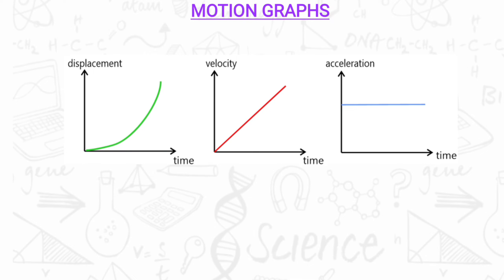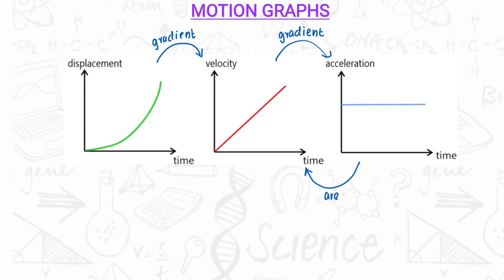Here we have three graphs: a displacement-time, a velocity-time, and an acceleration-time. The gradient of the displacement-time graph gives us the velocity, the gradient of the velocity-time graph gives us the acceleration, and the area under the velocity-time graph gives us the displacement.